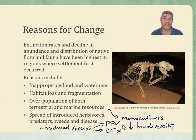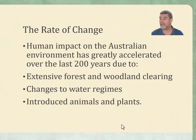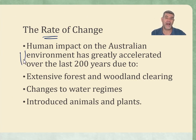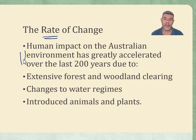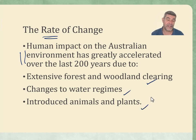Partly as a result of that, we now have a lot more checks and balances in place to find out what sorts of changes might be happening short term and long term. One of the keys here is to look at the rate of change — how quickly these changes are occurring. The human impact on the Australian environment, particularly since European settlement, has had a massive impact on the delicate balance of ecosystems through extensive woodland or forest clearing, changes in water regimes, and the introduction of particular plants and animals.